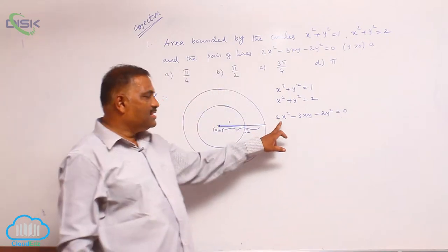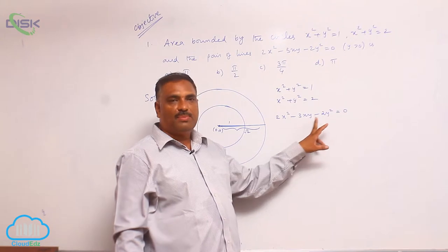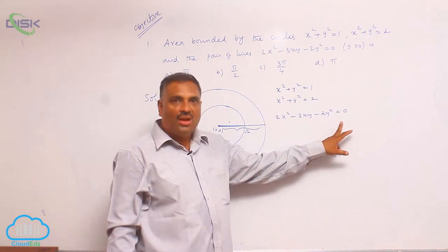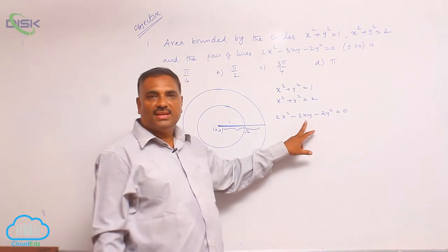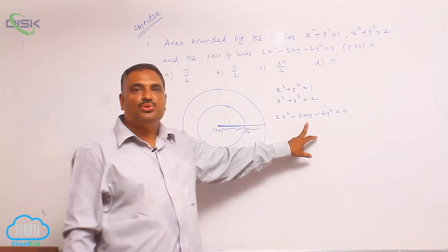No doubt this is ax square plus 2hxy plus by square equal to 0, which always represents a pair of straight lines passing through the origin.